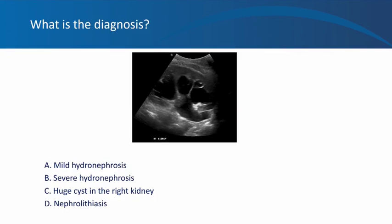Next question: this is a longitudinal view of the right kidney — is the diagnosis mild hydronephrosis, severe hydronephrosis, a huge cyst, or nephrolithiasis? No obvious stone with shadow is seen, making nephrolithiasis unlikely. A cyst inside the kidney would not cause renal pelvis and ureter dilation. Compared to previous images, there is far more urine backflow into the kidney with compression of the parenchyma — this is severe hydronephrosis.